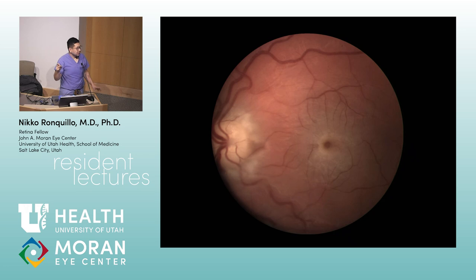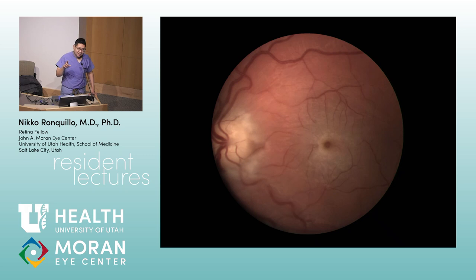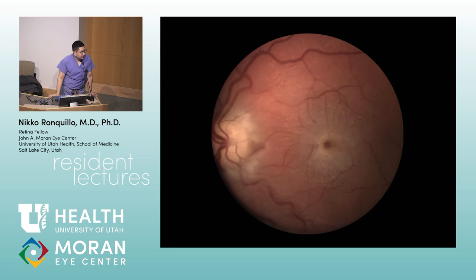The fovea is 1.5 millimeters — about the same as the optic nerve diameter. The parafovea is a 0.5 mm ring outside the 1.5 mm fovea, and then outside that is the perifovea. The foveola is approximately 0.35 mm. For CRAO in a child, think metabolic storage diseases: Tay-Sachs, Niemann-Pick, Sandhoff, and Hurler's.